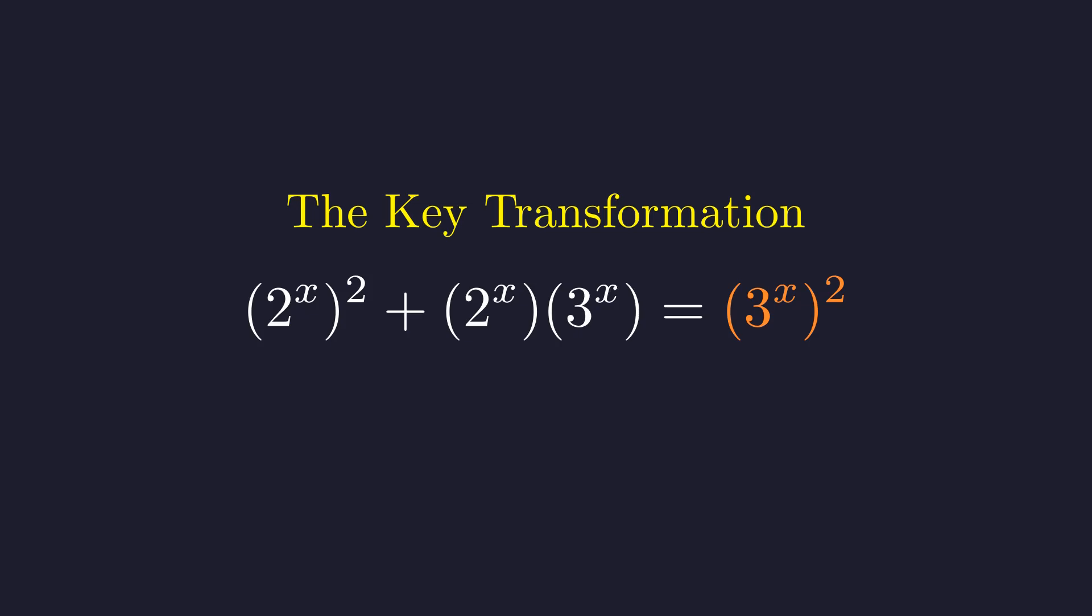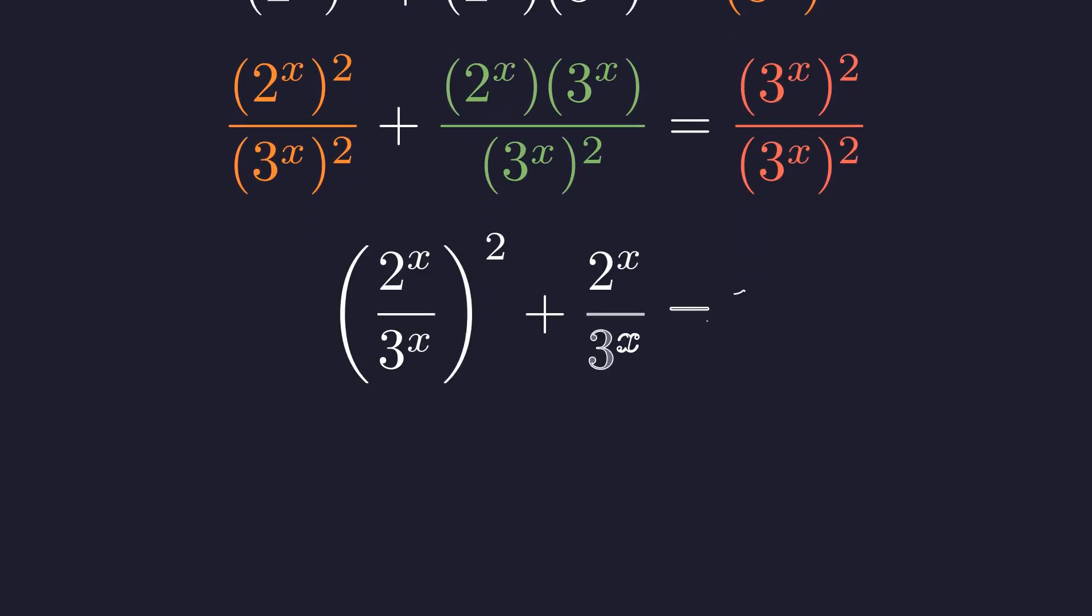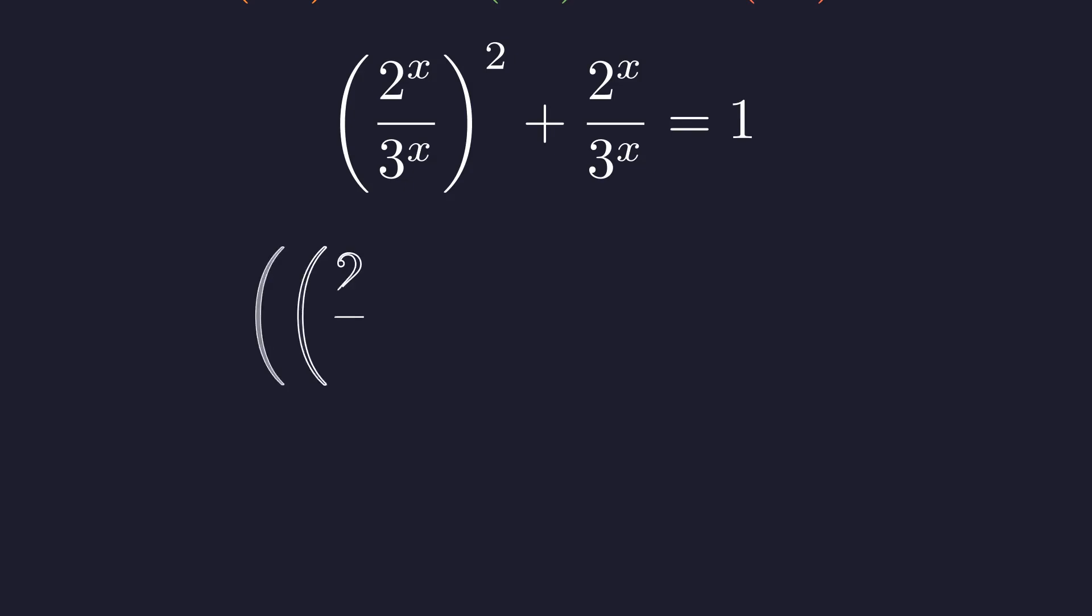Dividing through by this term normalizes the equation. Now let's simplify each of these three fractions one by one. Simplifying each fraction gives us this more structured equation. Using the quotient rule of exponents further simplifies our expression, revealing a structure resembling a quadratic equation.